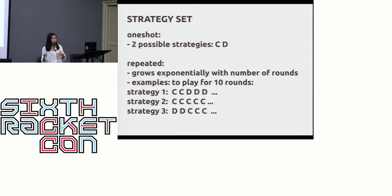The strategy set for the two settings are different. In the one-shot game, we have only two possible strategies: to cooperate or to defect. But for the repeated game, the number of strategies grows very fast with the number of rounds. For example, if we have just 10 rounds, one possible strategy is to cooperate all the time. Another example is that I can cooperate today and tomorrow I defect, and so on and so forth. If we're supposed to play the game infinitely, then the number of strategies grows to be infinite. This motivates us to run simulation on the matters.